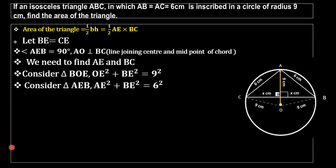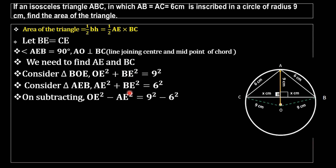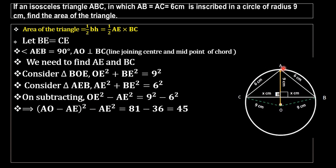We will subtract the two equations. That is: OE squared minus AE squared equals 9 squared minus 6 squared. In the next step, we change OE as AO minus AE. So OE squared becomes (AO minus AE) squared, and 9 squared minus 6 squared equals 81 minus 36, which equals 45.